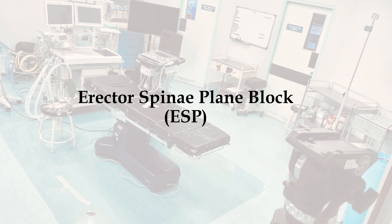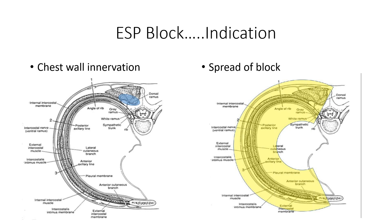Now let's move on to the erector spinae plane block. The ESP block was introduced in 2016, initially as a treatment for thoracic chronic pain. It was later found useful for surgery and rib trauma as well. We place our LA deep to the erector spinae muscle and superficial to the transverse process. The LA diffuses, blocking both the dorsal rami and the ventral rami, and can also block all the branches anteriorly, giving a sufficient block for hemithorax.